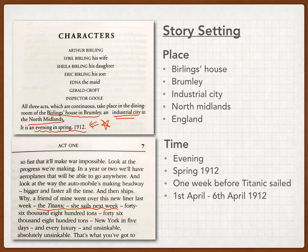If you read page 7 of the book, you will find one more clue about the time setting of the story. On page 7, it says the Titanic sails next week, which means the story happens one week before the Titanic sailed. So we can assume that the story happens during the week between the 1st of April to the 6th of April 1912.